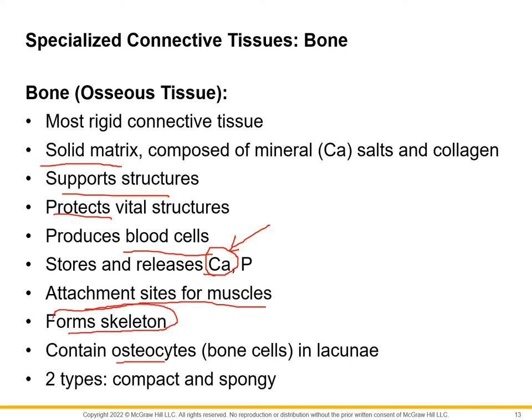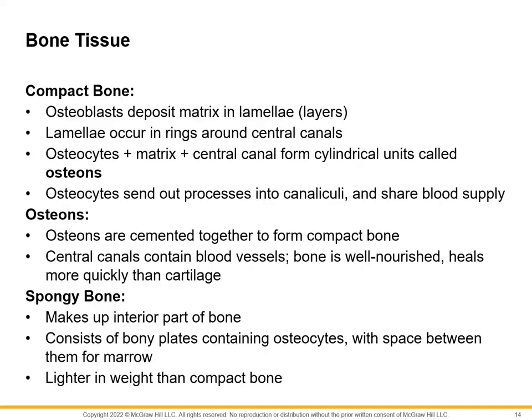Bone is going to be a site for muscle attachment — it is the skeleton. The cells of it are called osteocytes — that's the mature bone cell. There's also osteoblasts, which produce bone, and osteoclasts. Osteocytes are found in little hollow areas called lacunae, just like the chondrocytes we looked at. Compact bone is going to be defined by these cylindrical units called osteons.